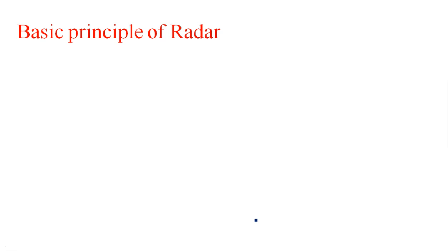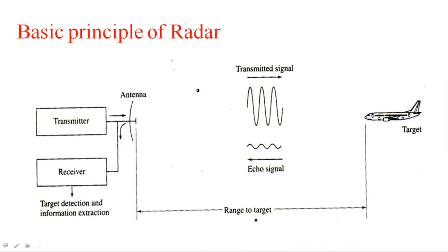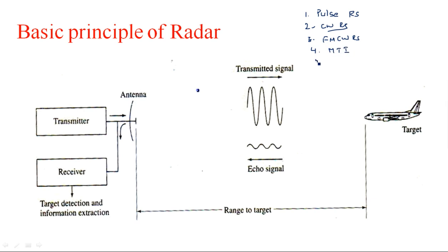Now let us see the basic principle of the radar system and its main blocks. There are several types of radar systems: pulse radar system, CW radar system, FM-CW radar system, MTI radar system, and pulse Doppler radar system. For all these different types, three blocks are common: transmitter, receiver, and antenna.